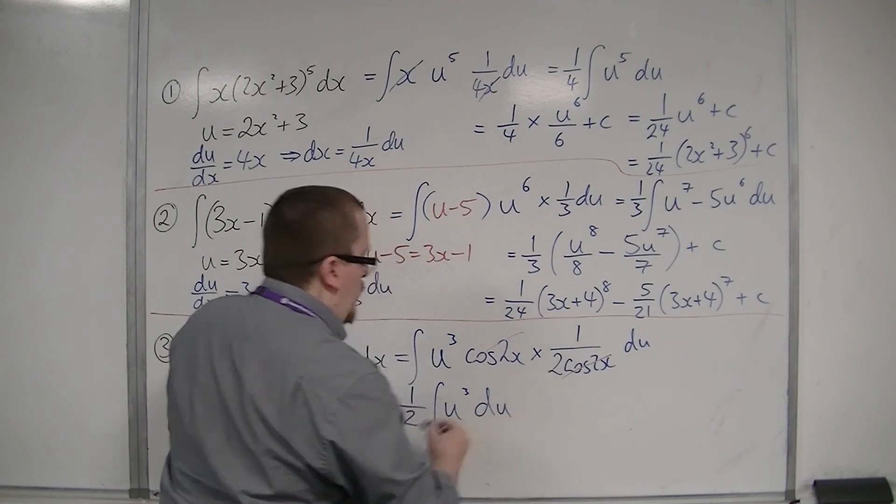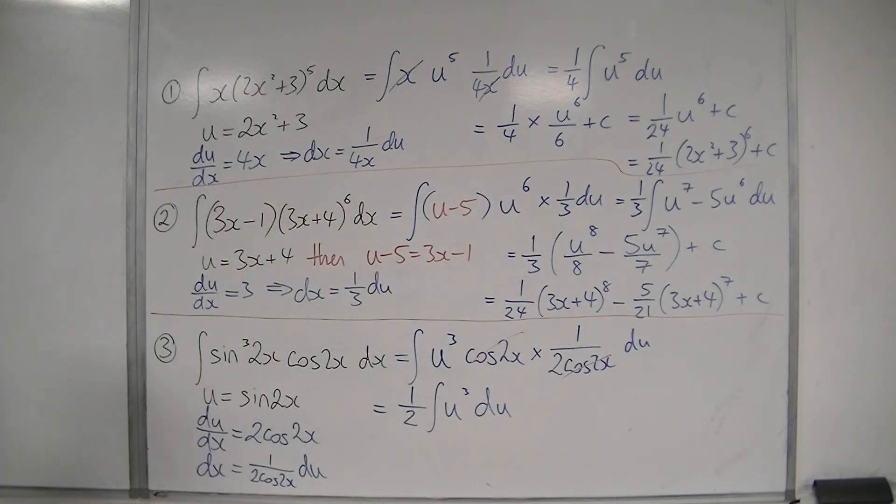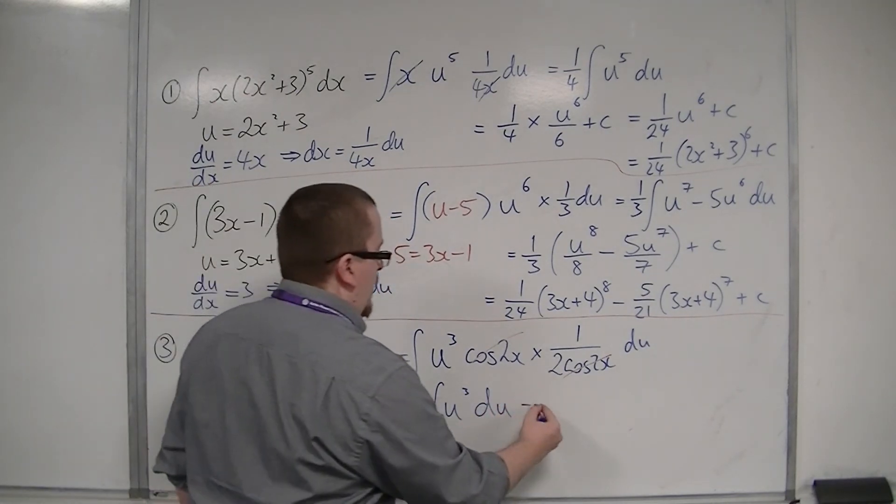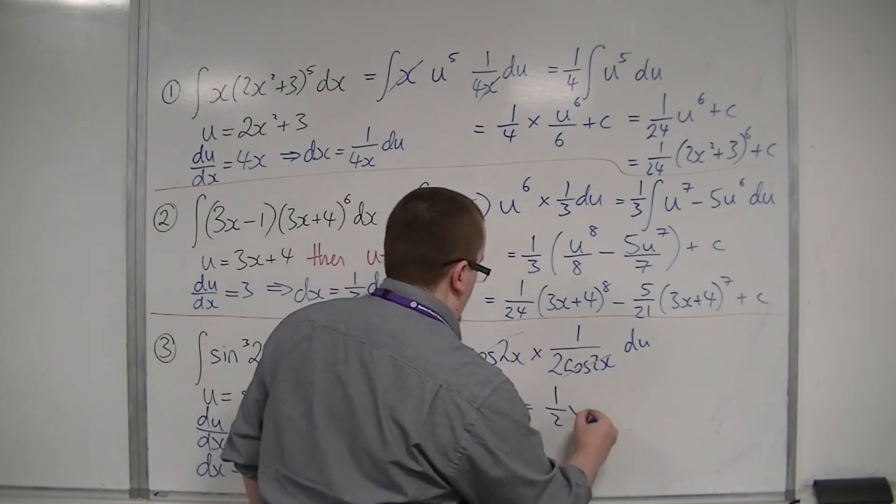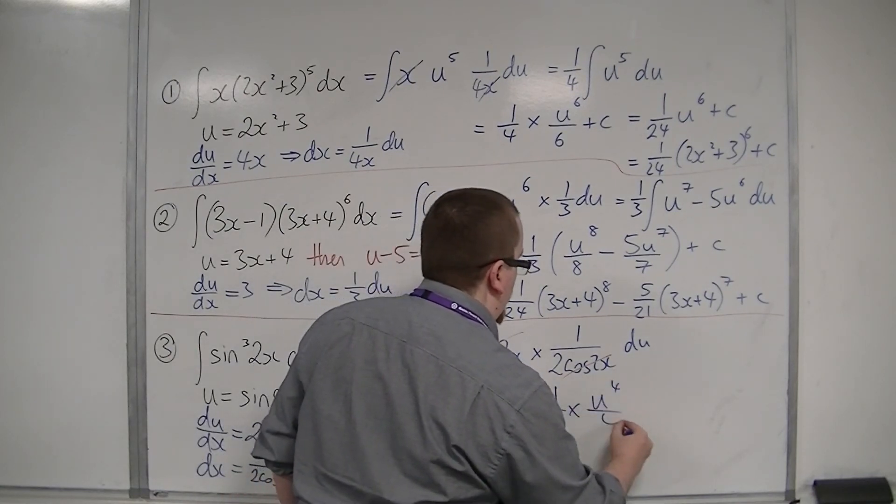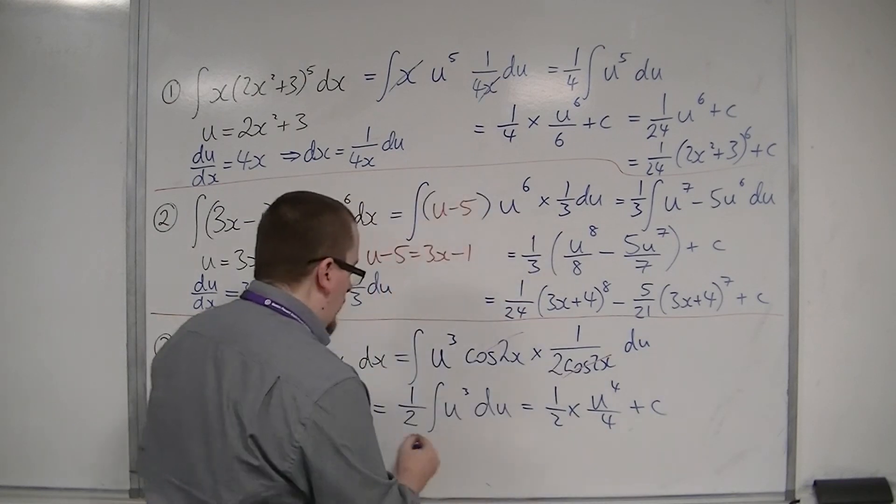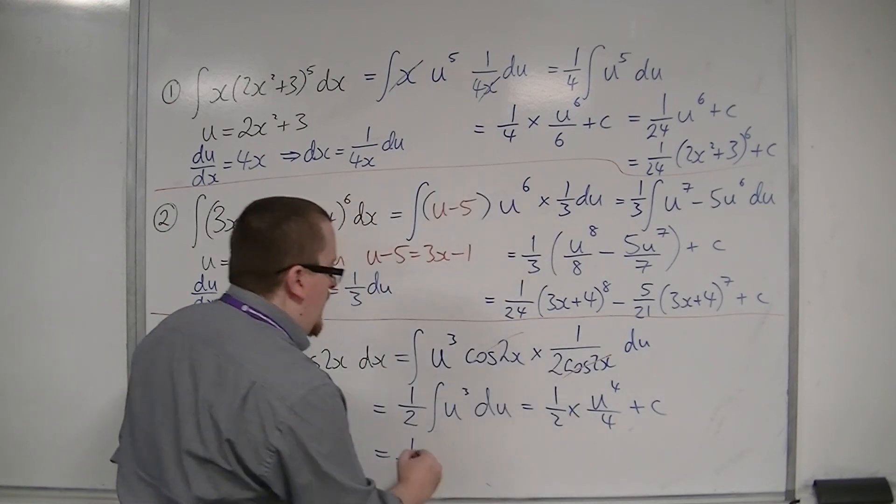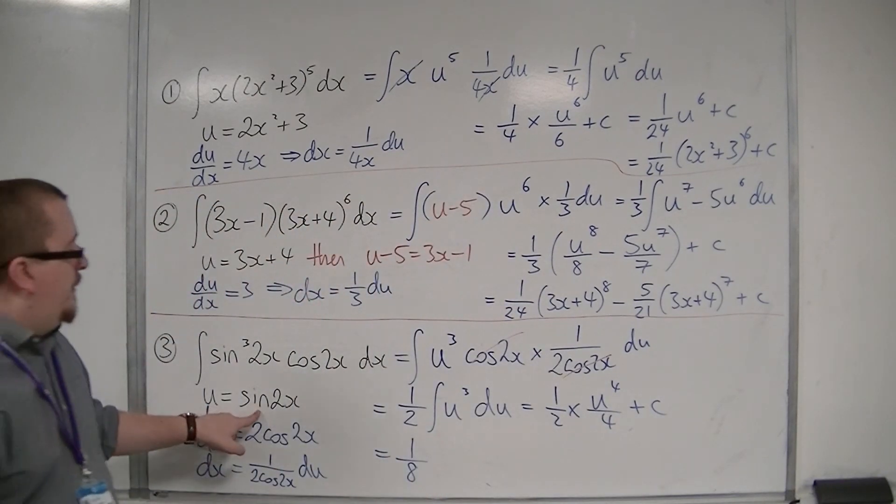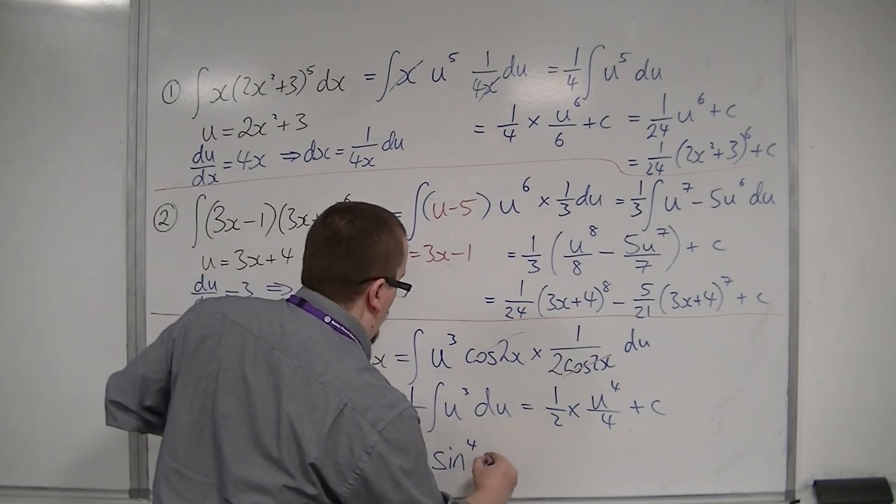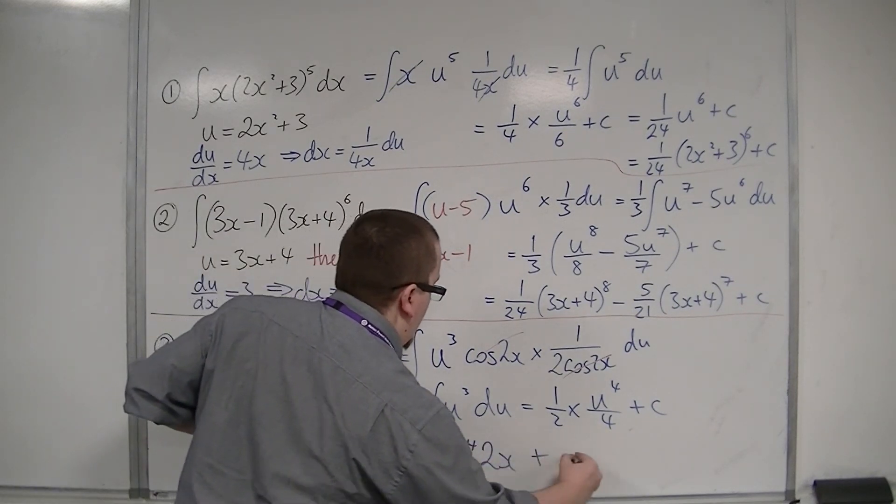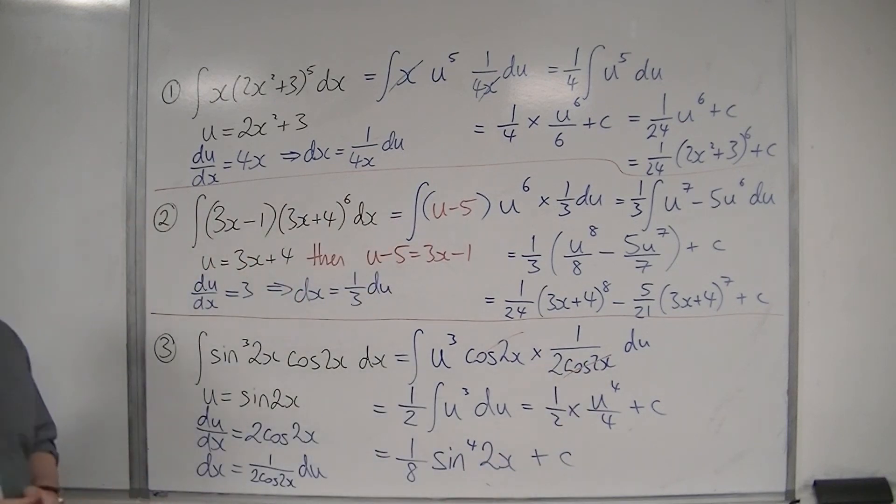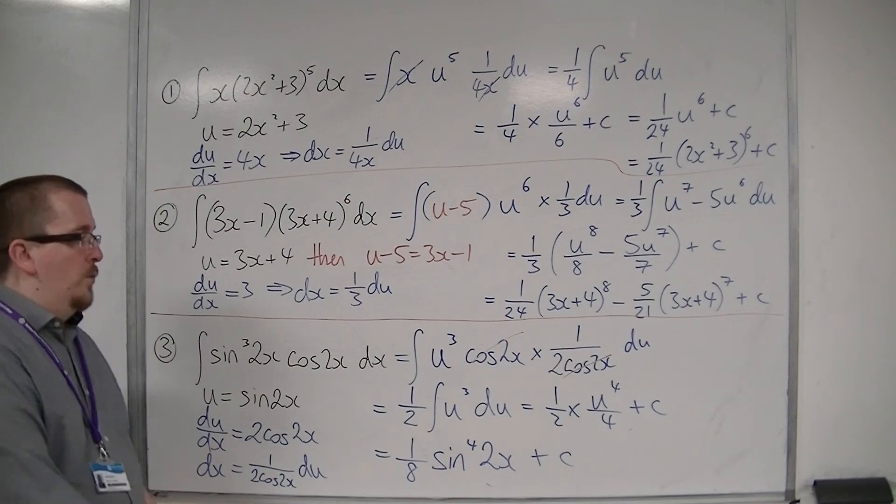So I now have 1/2 integral of u³ du. So that's 1/2 times u⁴/4, plus c. So that's 1/8 times u⁴, well, that's sin⁴(2x). And I've got that plus c, constant of integration. And that's how we do the final question there.